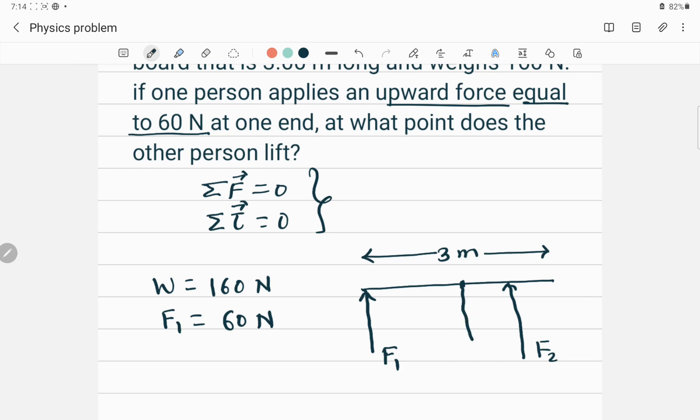This force, which is the weight because of weight, will be acting downward. So this is a free-body diagram of the system. So question is asking how far from this point should the second guy apply the force? Suppose that this is distance x, we have to find x. So what else is given in the problem? One is the weight and there is force F1 applied by one person at one end of this wooden board.